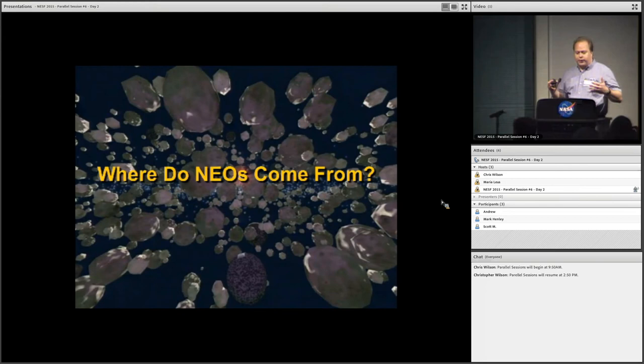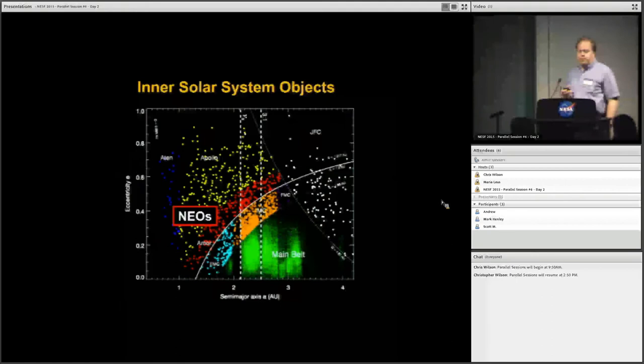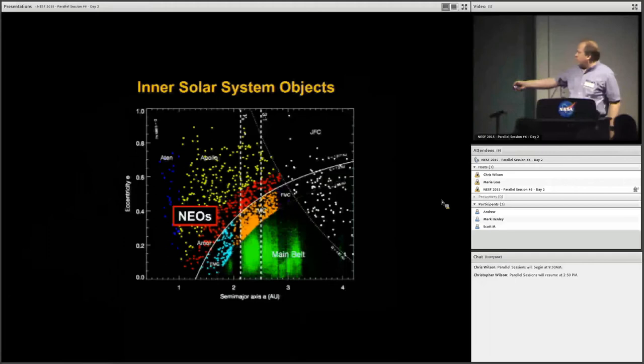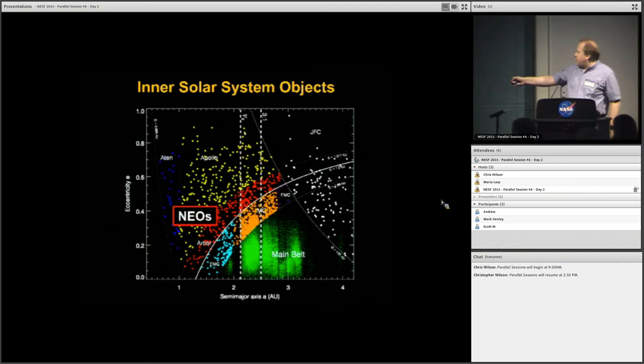This is a plot showing many of the near-Earth objects and small bodies in the inner solar system. What you're looking at is a plot of semi-major axis and eccentricity. The blue and yellow guys are the Athens and Apollos - bodies that can cross Earth's orbit and have a chance to hit the Earth. The red guys are called the Amors, objects that are nearly Earth crossing but not quite. So traditionally this is all called the near-Earth object population.